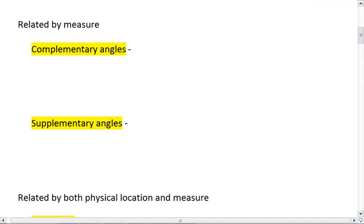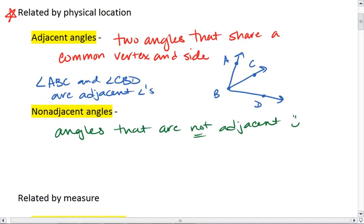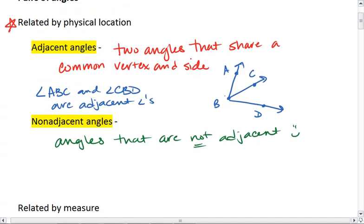You can also have angles that are related by measure. So we can have, where if they share a side and a vertex, they're going to be adjacent angles. If they don't, like angle A and angle B, they're non-adjacent.